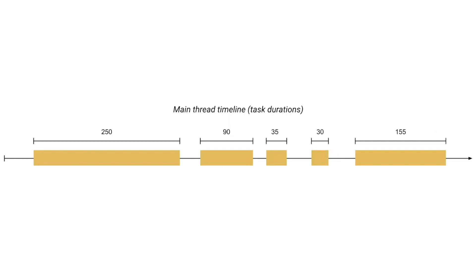Total Blocking Time measures the total time between First Contentful Paint and Time to Interactive. In the main thread, if a task takes over 50 milliseconds, then it's considered blocked, as the browser cannot interrupt a task in progress.